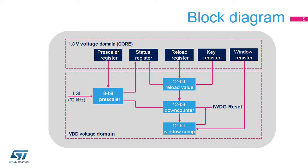The 8-bit prescaler is used to divide the LSI oscillator frequency. When the IWDG is started, the 12-bit counter starts counting down from the reset value of 0xFFF. To refresh the IWDG counter, the key value 0xAAAA must be written in the key register to reload the counter value. If the down-counter reaches the end of the count value, 0x000, a system reset is generated.